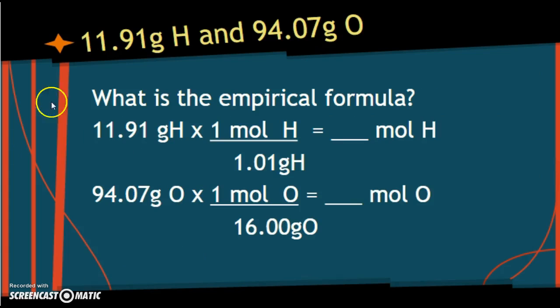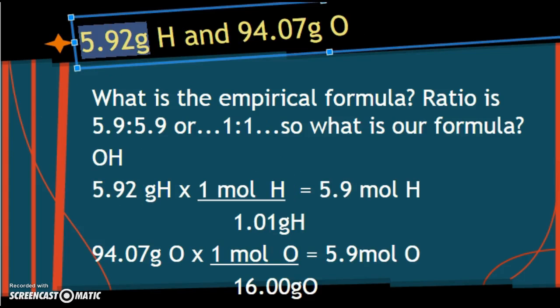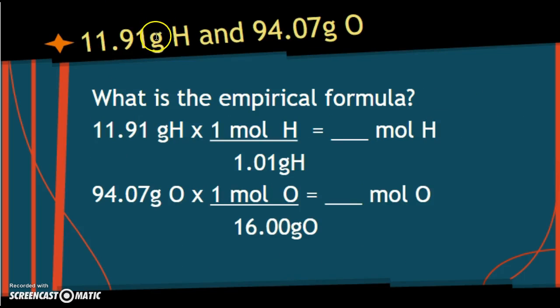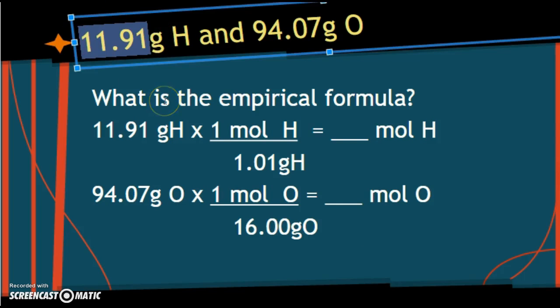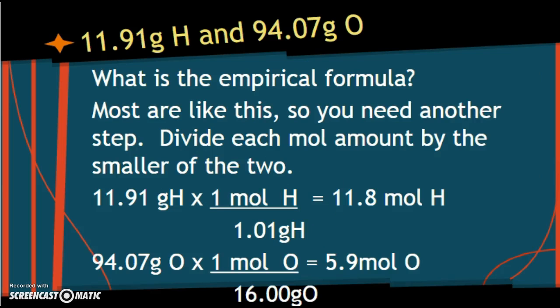When you start writing two non-metals together, it gets weird. So if you wrote HO, that would be correct for this one, or OH. All right, let's do one that's slightly different. So for this problem, I gave you 5.92 grams of hydrogen. Now I have 11.91 grams of hydrogen. So I set it all up for you because it's the same setup. Except now we're going to have different amounts of each. We're going to have different moles.